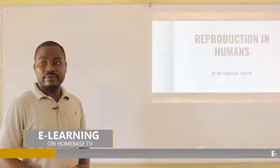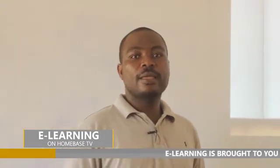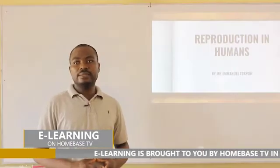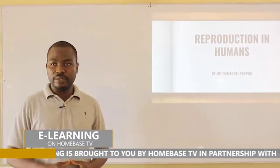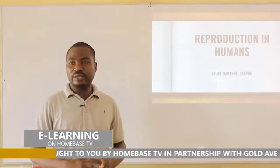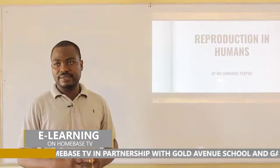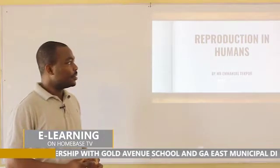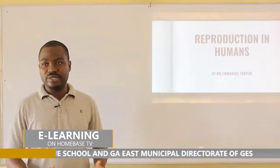Before then, let's have a recall. In GHS 1, under diversity of matter, you were taught about living and non-living things, and the characteristics of living and non-living things. Here, we want to look at some characteristics of living things. Living things feed, which is nutrition. Living things move, which is locomotion.